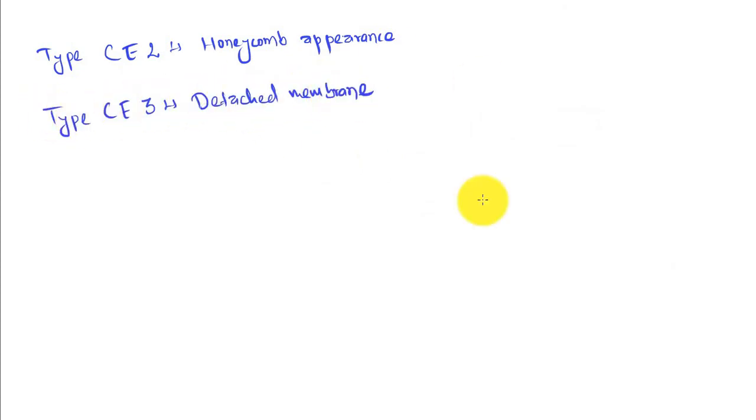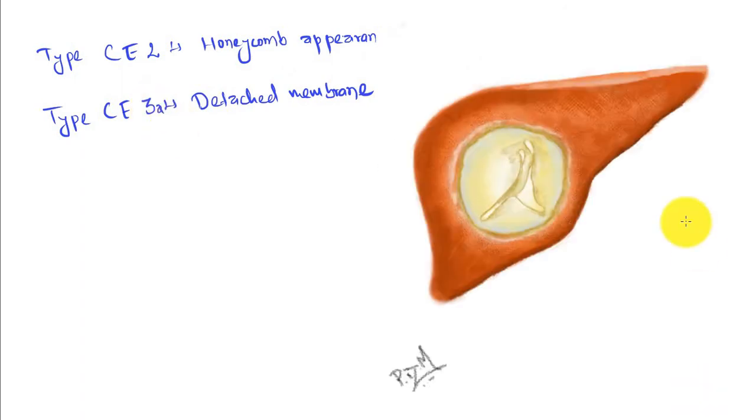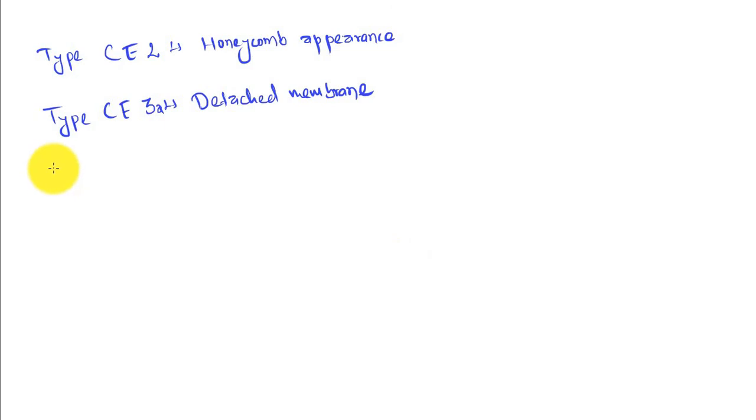Type CE3: detached membrane. CE3A type shows detached membrane as you see here. Type CE3B: defined daughter cysts are present within mucinous matrix.